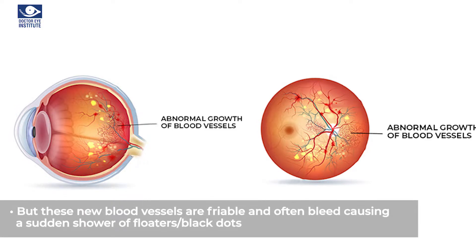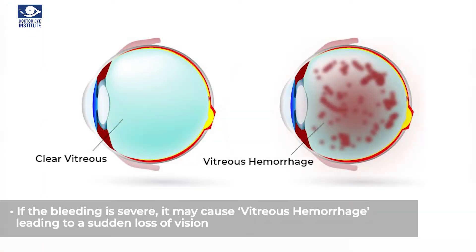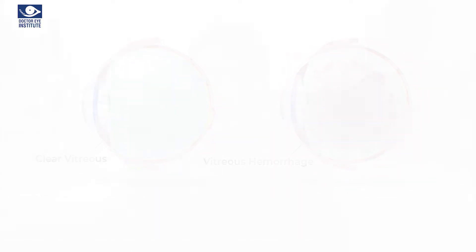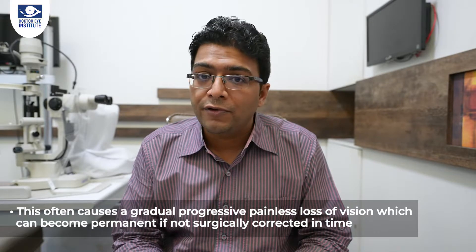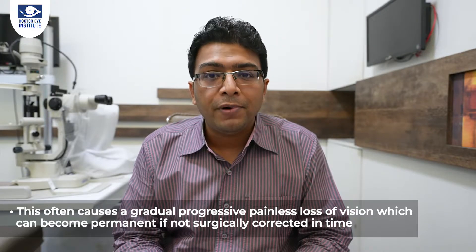These new blood vessels, however, are very friable and they often bleed, causing a sudden shower of floaters or black dots each time they bleed. Sometimes, if the bleeding is very severe, they may cause a hemorrhage inside the vitreous gel of the eye — this is called vitreous hemorrhage. It causes a sudden complete loss of vision as it obstructs the transmission of light rays entering the eye to the retina. These new blood vessels are supported by a scaffold of scar or fibrous tissue, which may sometimes contract and pull or displace the retina from its position — this is called tractional retinal detachment.